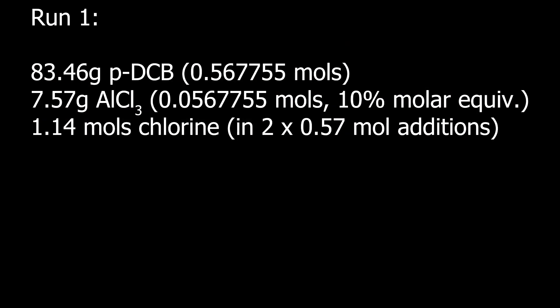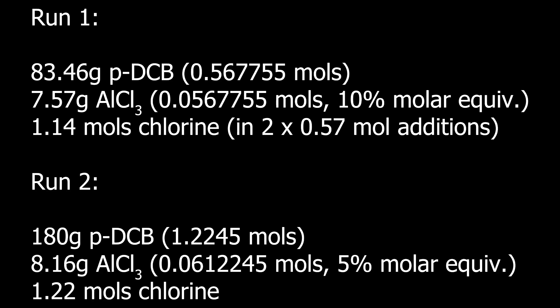Here's what I used in run one. I did two additions of chlorine because the first one went poorly, and I thought I'd have better luck on the second one, but it went just as poorly. To preserve the anhydrous lab grade aluminum chloride I have left, I decided to use a 5% molar equivalent in the second run. On to the video.